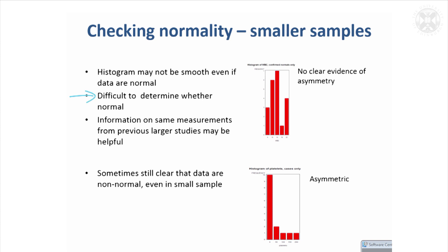What is satisfactory is if the same measurement's been made in another, larger study. If it's been found to be normal there, it's reasonable to assume it's going to be normal in your study. However, sometimes even with a small sample it is clear the data are non-normal.